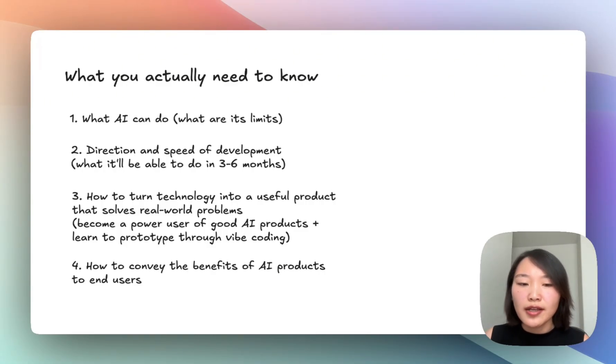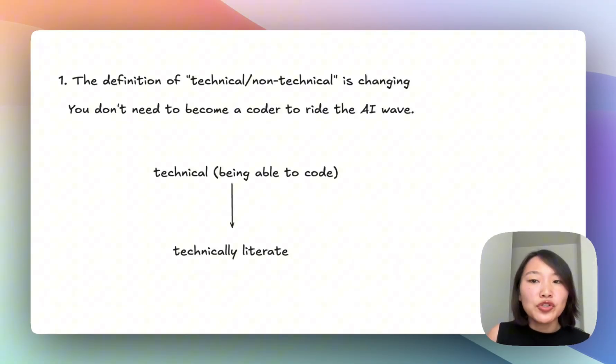Third, you should understand how to turn technology into an actually useful product that can solve real-world problems. You should know about and become a power user of the top AI products and also learn how to prototype or design products through vibe coding. Fourth, you should be able to convey the benefits of AI products to end users.